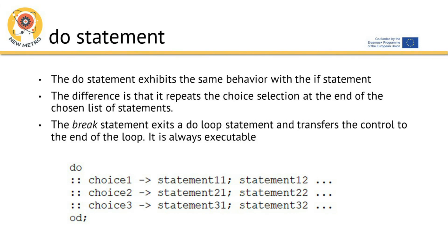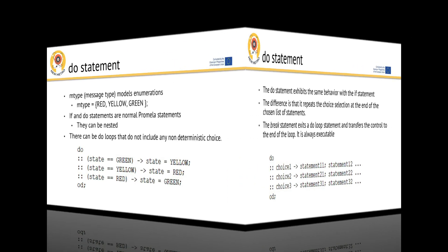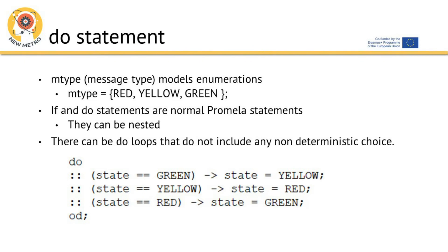The do statement exhibits the same behavior as the if statement. The difference is that it repeats the choice selection at the end of the chosen list of statements. The break statement exits a do loop and transfers control to the end of the loop; it is always executable. The mtype (message type) models enumerations — for example: mtype = {red, yellow, green}. If and do statements can be nested, and do loops may not include any non-deterministic choice.